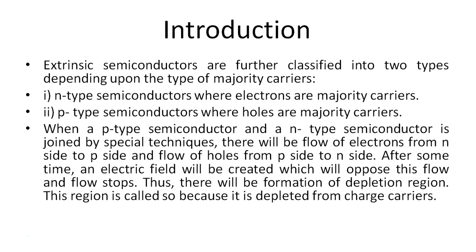When a P-type semiconductor and an N-type semiconductor are joined by special techniques, there will be a flow of electrons from the N side to the P side, and a flow of holes from the P side to the N side. After some time, an electric field will be created which will oppose this flow and the flow stops. Thus there will be formation of a depletion region, called so because it is depleted of charge carriers.